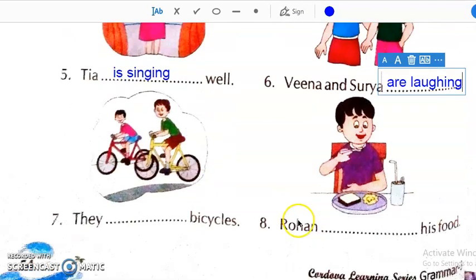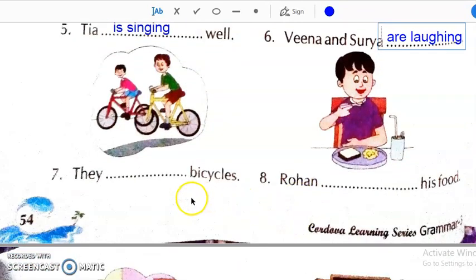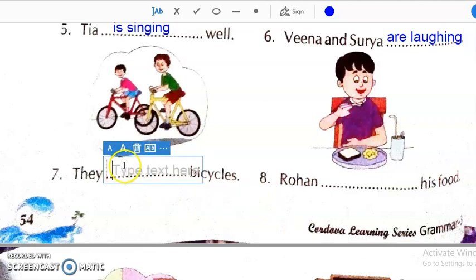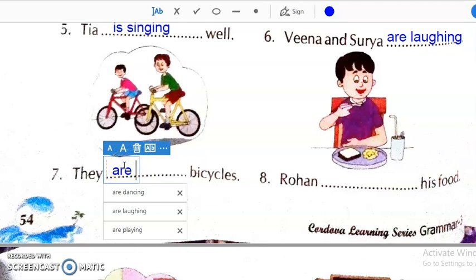Then, next one they dash bicycles. For that what will we write, they are riding bicycles. Then, next Rohan dash his food.